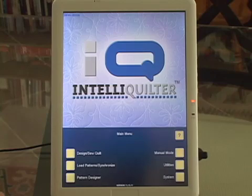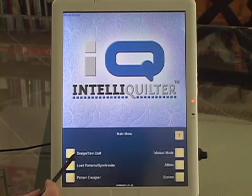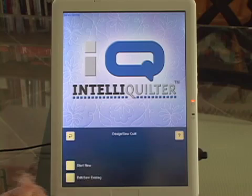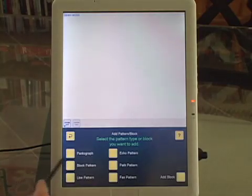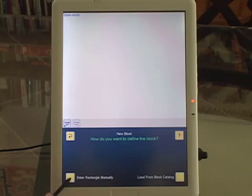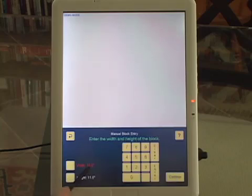I'm going to show how to do background fills using a combination of echo and path pattern. Design Sew Quilt, Start New, Block Pattern, Enter Rectangle Manually, 10 by 11, that's OK, Continue.